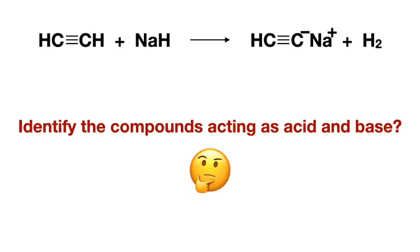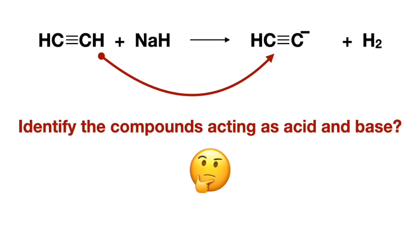When we follow the left reactant to the product side and remove the alkali metal — since it's only involved in salt formation — we see that it lost a proton, which makes it a proton donor, which makes it an acid and the other reactant a base.